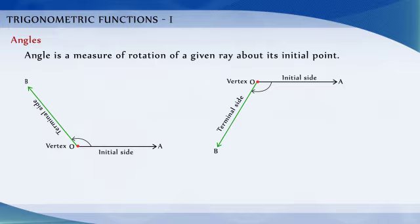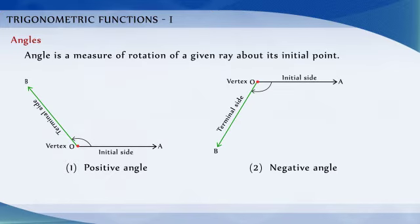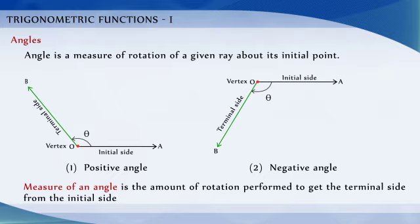If the direction of rotation is anticlockwise, the angle is said to be positive, and if the direction of rotation is clockwise, then the angle is said to be negative. The measure of an angle is the amount of rotation performed to get the terminal side from the initial side.